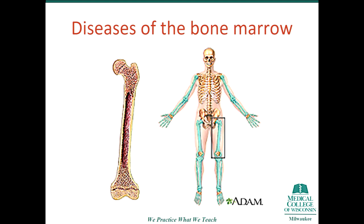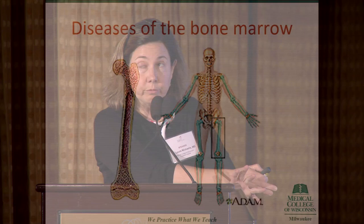Myeloproliferative neoplasms are diseases of the bone marrow. The bone marrow in adults is in the pelvis, in the long bones of the legs, a little bit in the skull and the sternum. That's why we do the bone marrow biopsy in the pelvis, because that's where most of the bone marrow is. When you're a fetus and you don't have bones, your bone marrow is made in the spleen. So when the bone marrow gets filled with scar tissue and the body needs somewhere else to make blood, it puts it in the spleen.